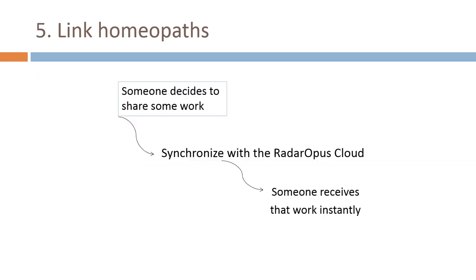Another linking we would like to do is linking between homeopaths using cloud technology — a server or network of servers in cyberspace that collects information. You can send your work to the cloud, like your Synthesis additions, and people, with your agreement, can retrieve that information automatically, stepwise, or in a controlled way. We can synchronize different people's work through the cloud — people working in different practices, hospitals, and countries could collaborate easily. This will also be a fantastic technology for research projects.